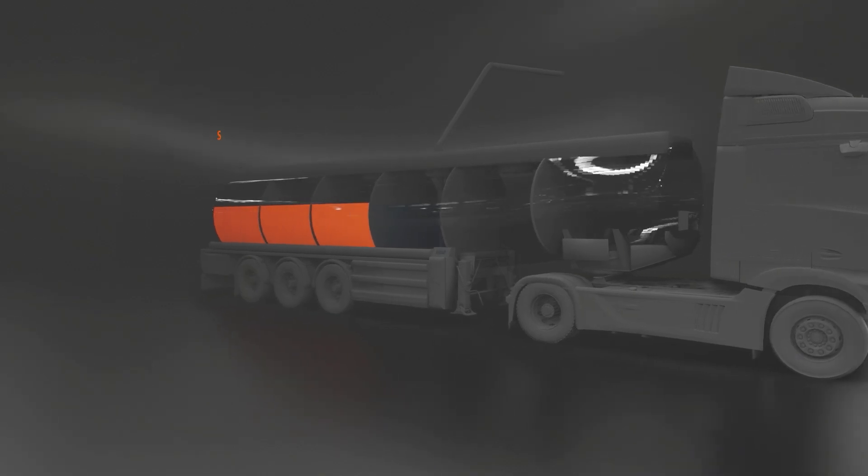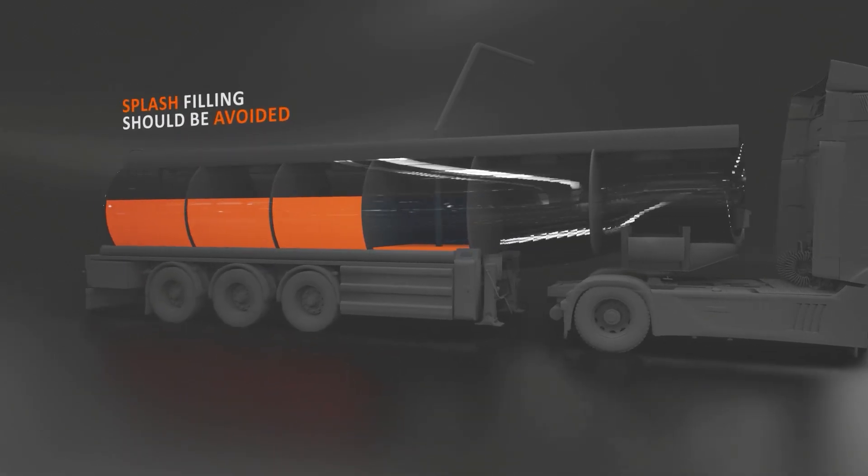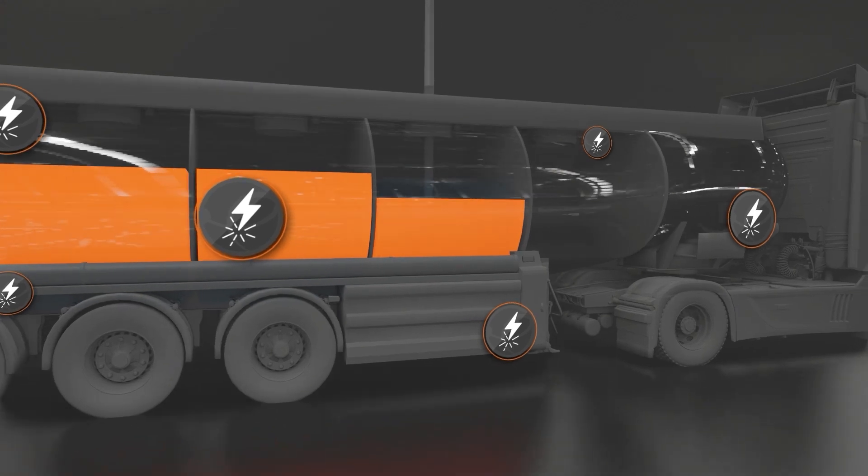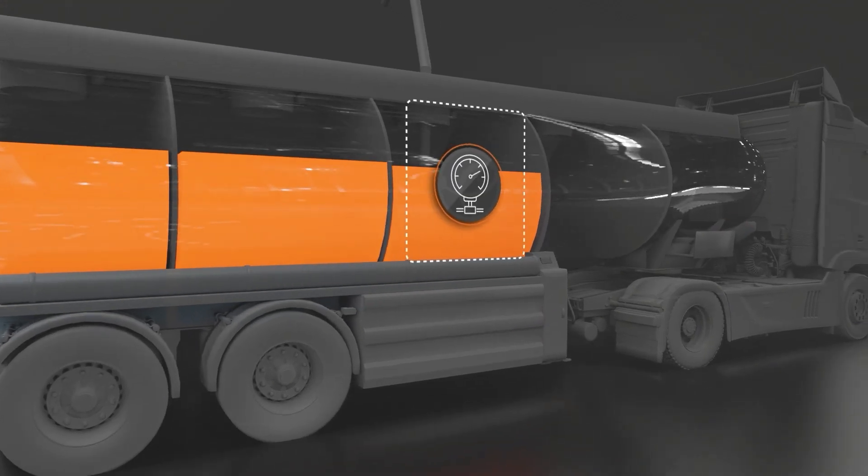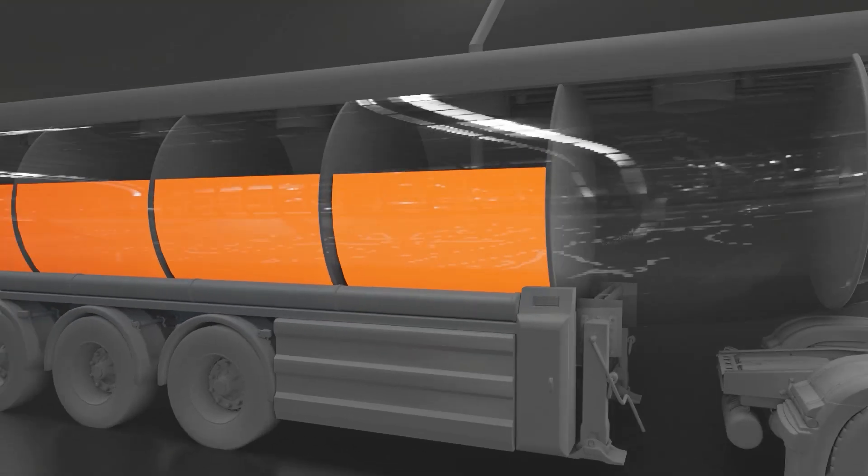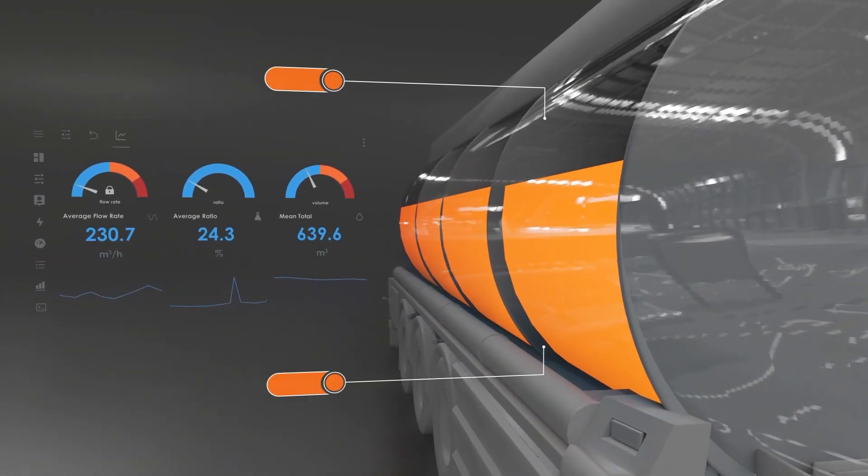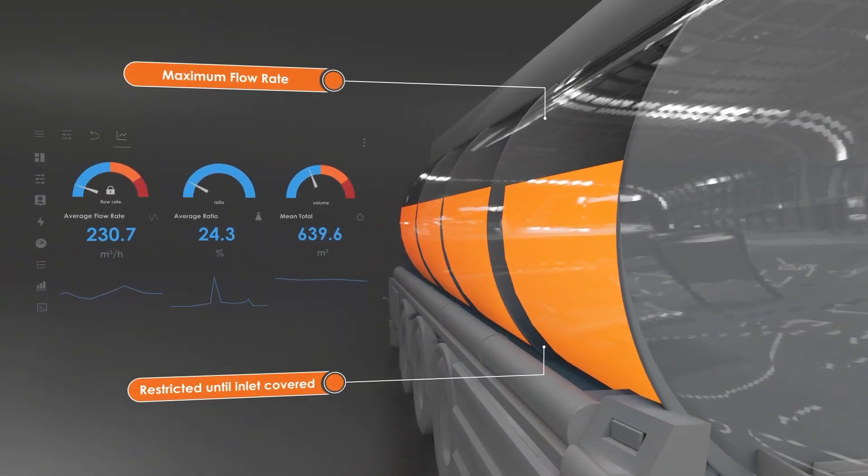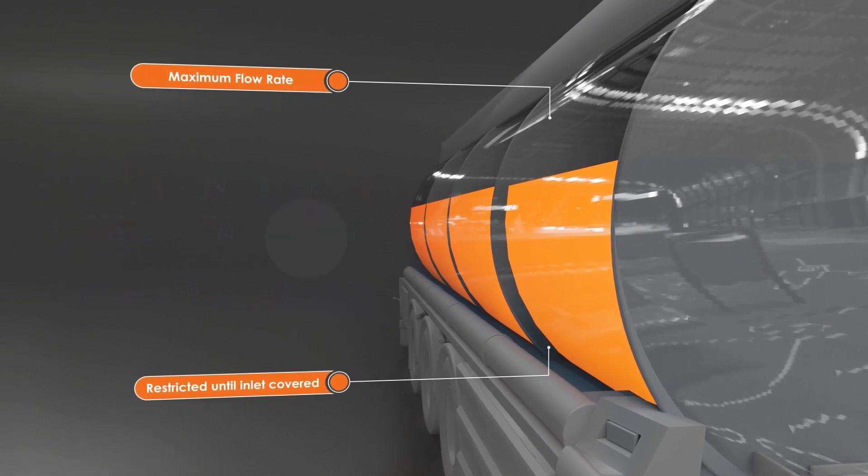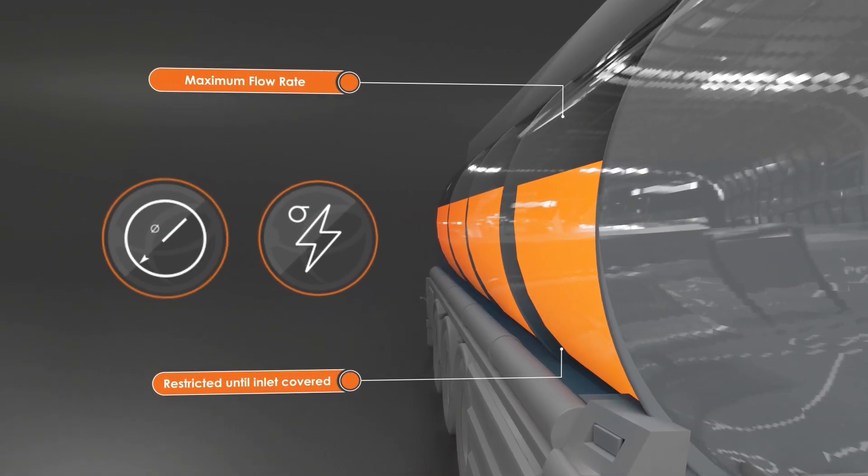Irrespective of the product, splash filling should be avoided as this increases the possibility of generating static. Flow rates are extremely important in minimizing the build-up of electrostatic charge. Initial flow rate should be restricted until the filling nozzle or inlet has been covered. The maximum flow rate should also be observed. These are dependent on factors such as the conductivity of the product and the diameter of the fill pipe.